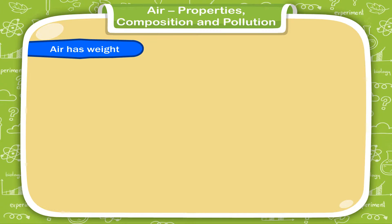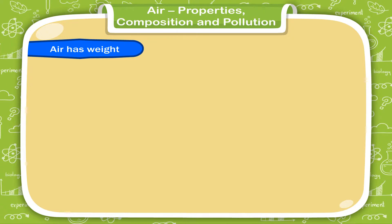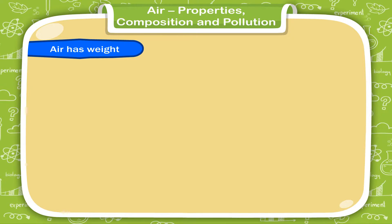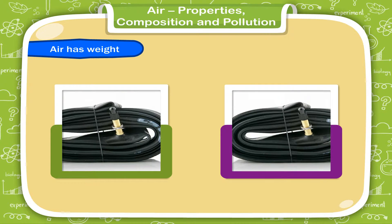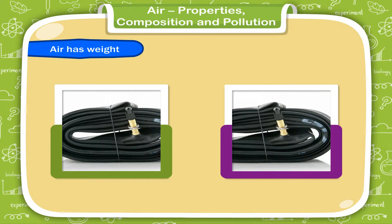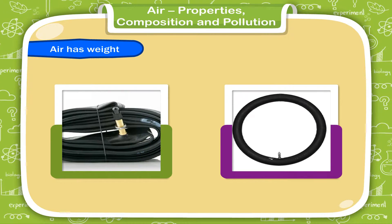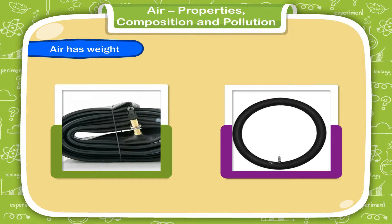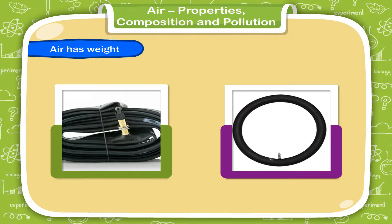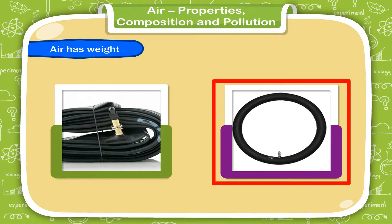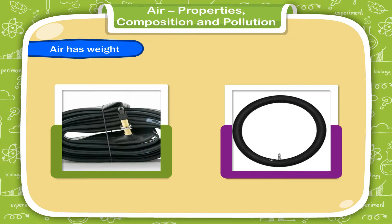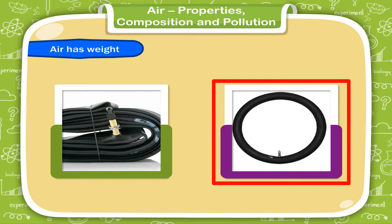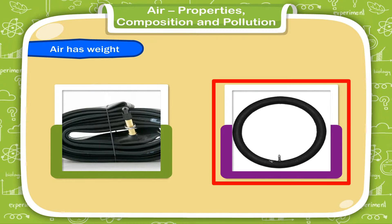Air has weight. To prove that air has weight, take two empty cycle tubes. Fill air in one tube and experience the weight of both the tubes. You will feel that the tube containing air is heavier. You can try another experiment.